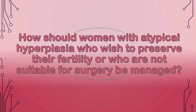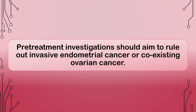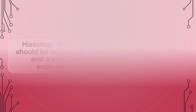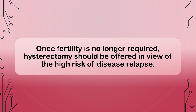How should women with atypical hyperplasia who wish to preserve their fertility or who are not suitable for surgery be managed? Women wishing to retain their fertility should be counseled about the risk of underlying malignancy and subsequent progression to endometrial cancer. Pre-treatment investigations should aim to rule out invasive endometrial cancer or coexisting ovarian cancer. Histology, imaging, and tumor marker results should be reviewed in a multidisciplinary meeting and a plan for management and ongoing endometrial surveillance formulated. First-line treatment with the LNG-IUS should be recommended with oral progestogens as a second-best alternative. Once fertility is no longer required, hysterectomy should be offered in view of the high risk of disease relapse.